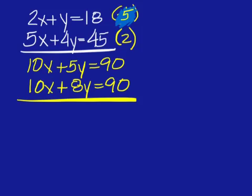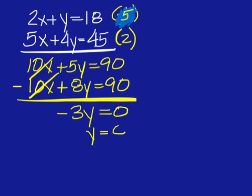You have a positive 10 and a positive 10. That means you're going to subtract so that you can get 0. When we subtract, these cancel out. You'll have 5 minus 8. 5 minus 8 is negative 3. And then 90 minus 90 is 0. Divide 0 by negative 3 to get 0.